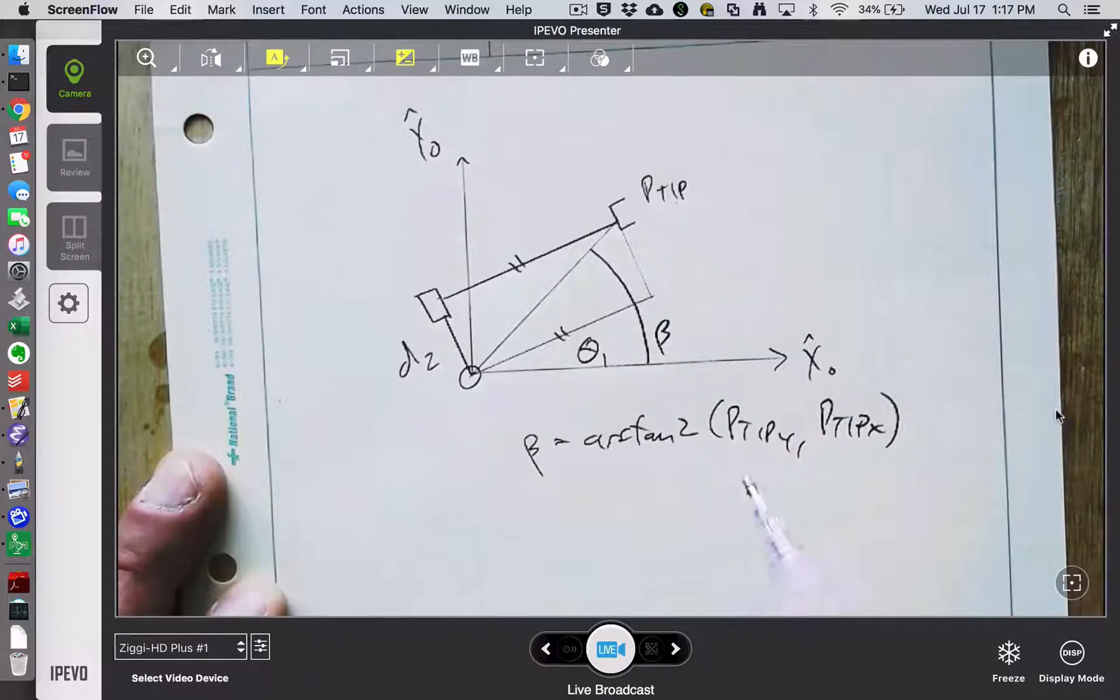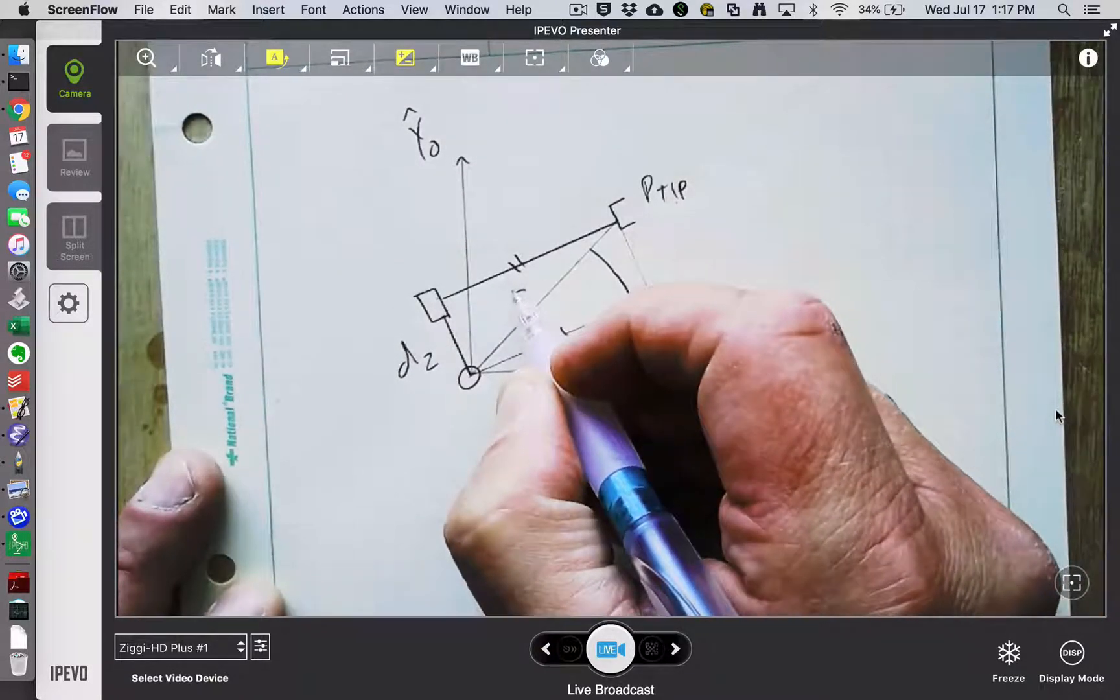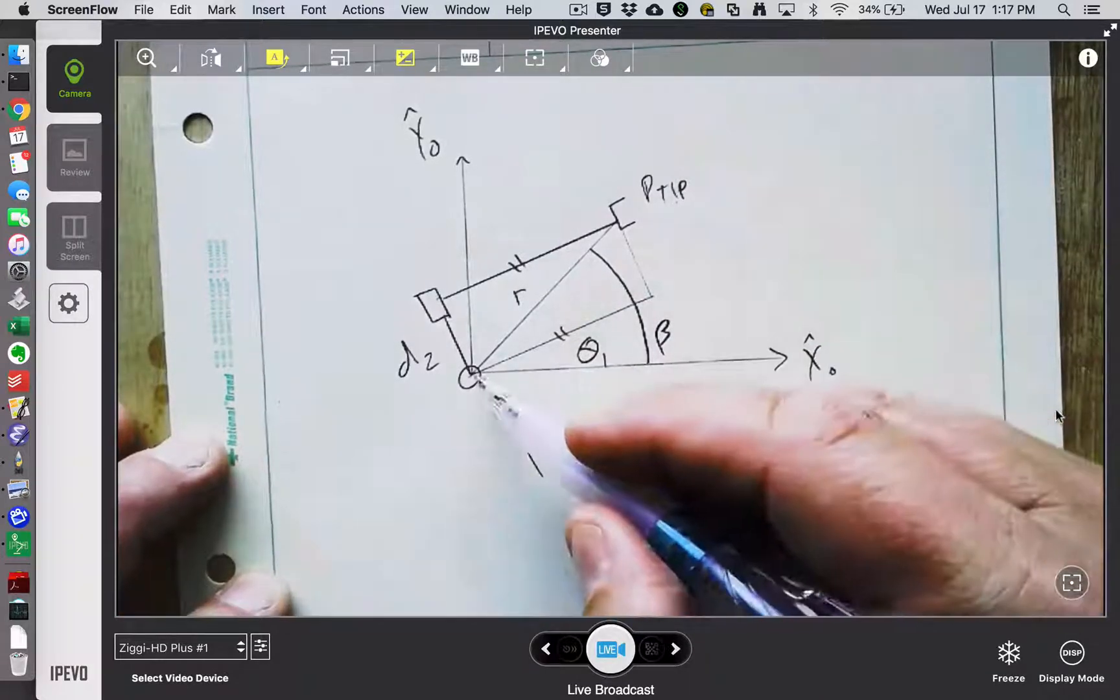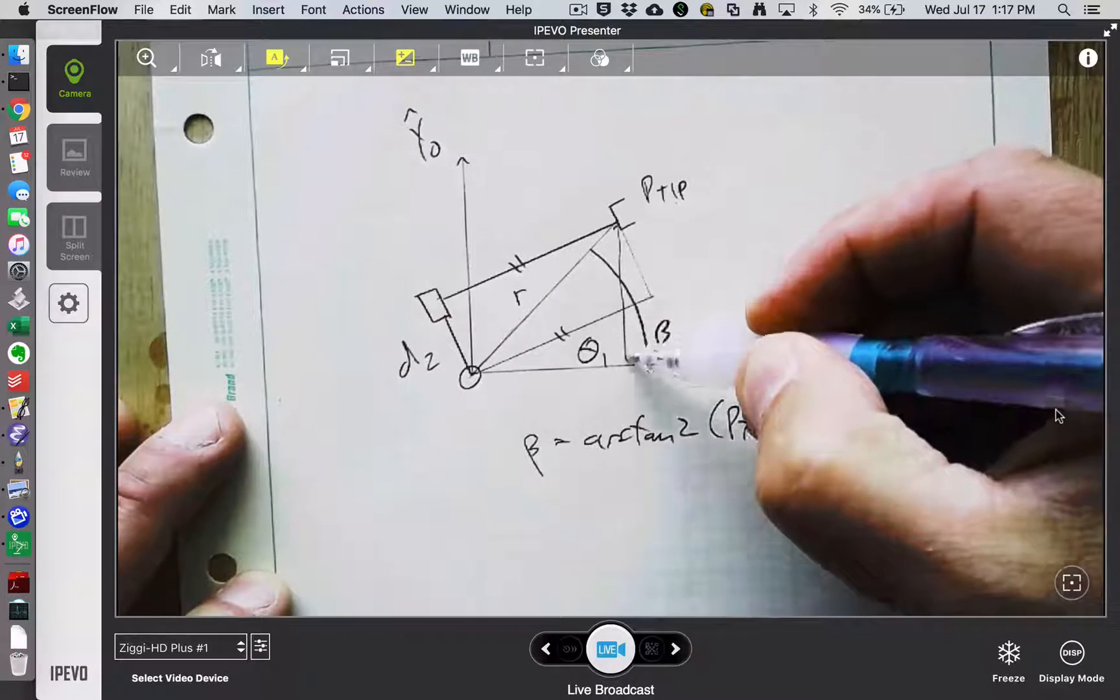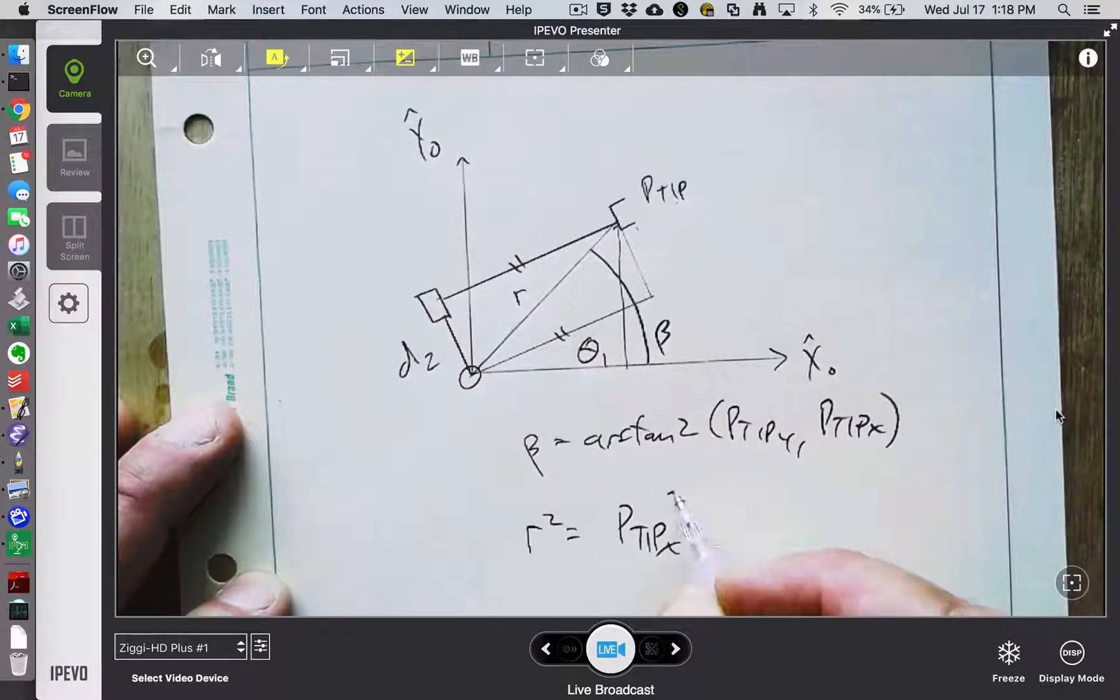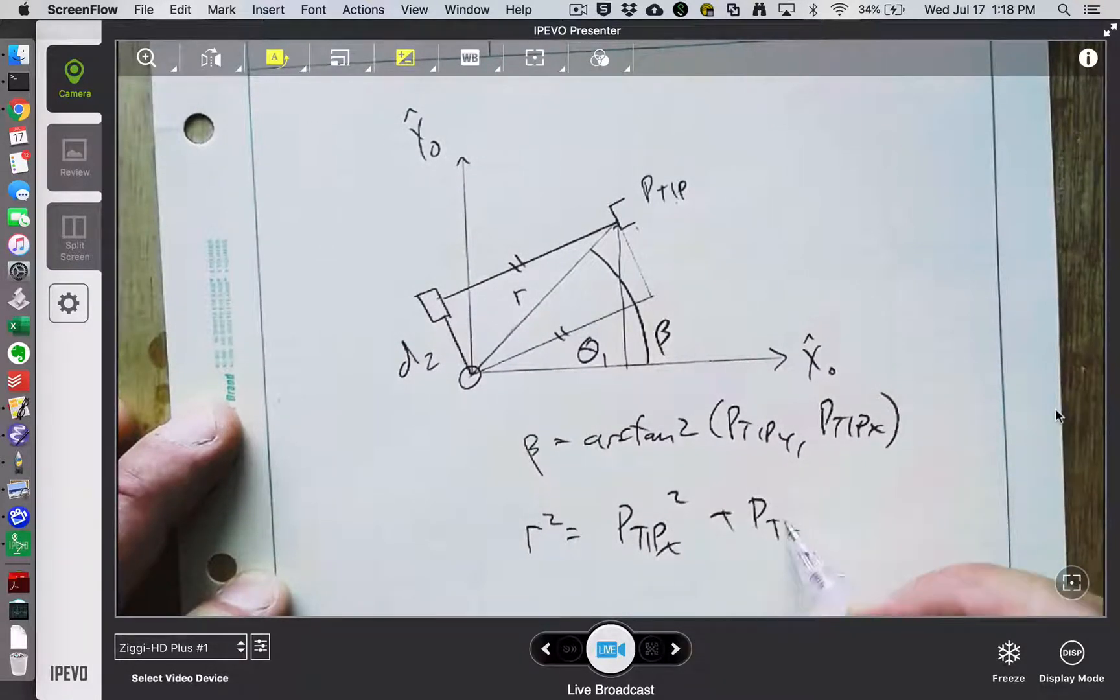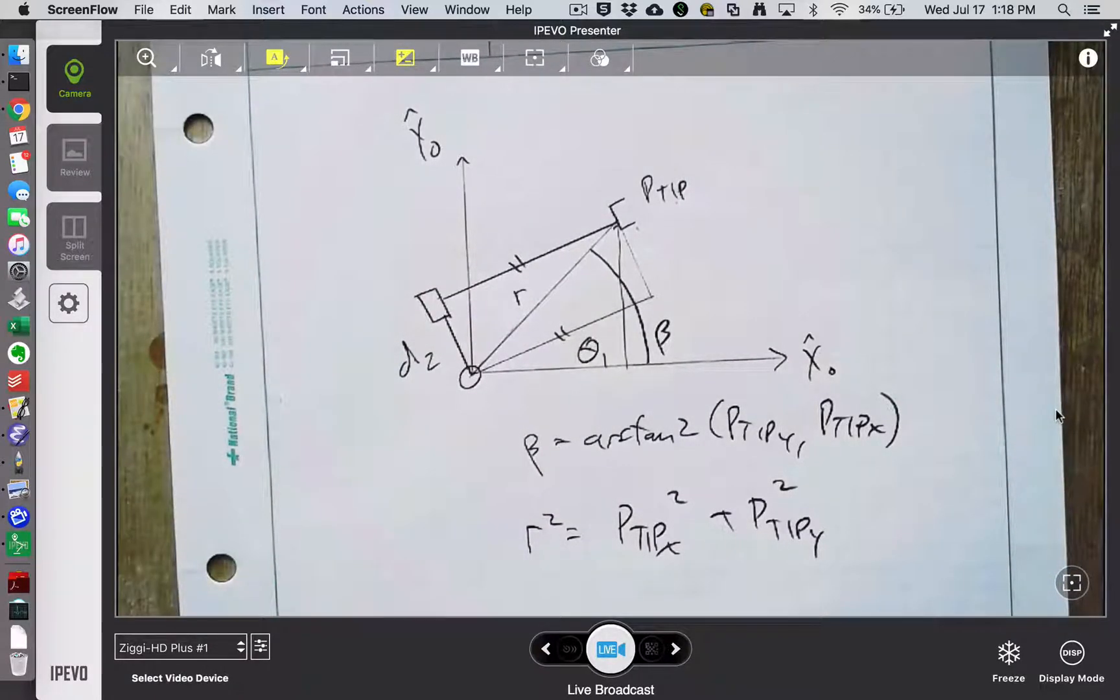What I want to say, so I can find beta pretty easily. I should also be able to find this radius really easily, this distance. So again, if I drew a P-tip X, P-tip Y rectangle, then R squared is P-tip Y squared, P-tip X squared. Those are the sides of a right triangle. Very straightforward.